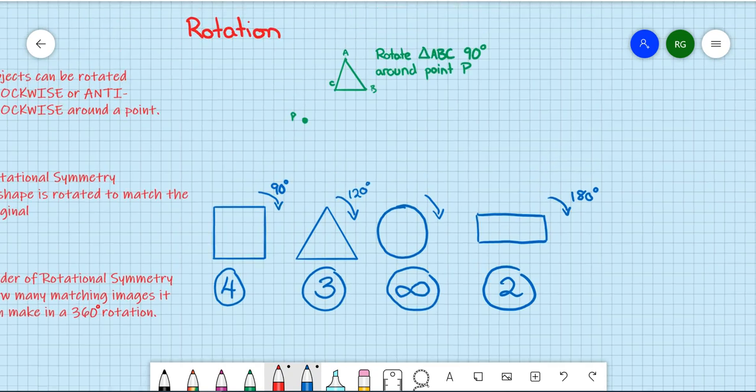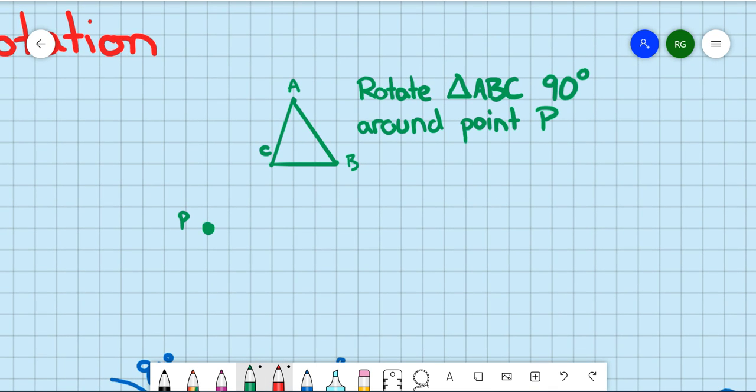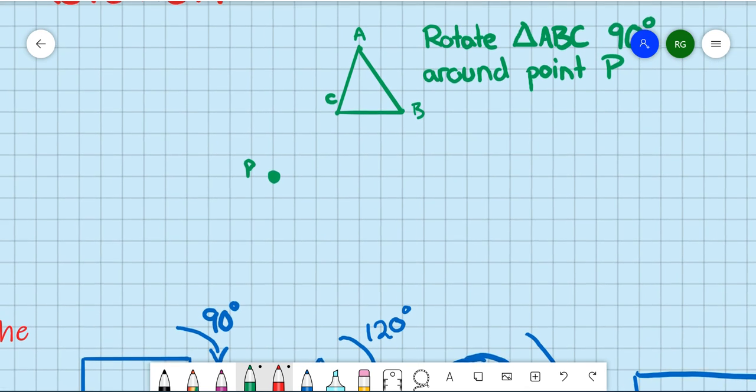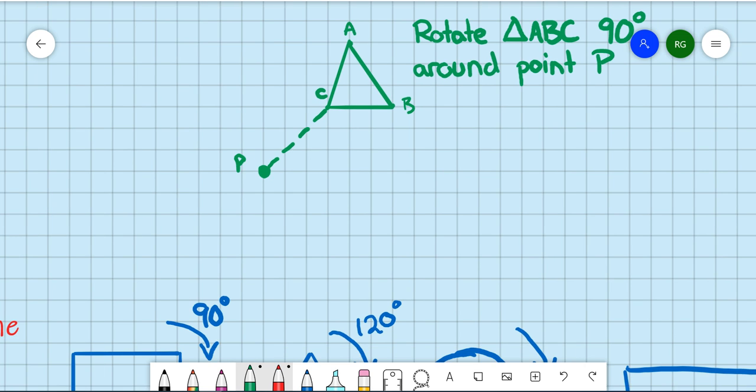Now just to give you a little example, up here in green, I've got a small question. It says, rotate triangle ABC 90 degrees around point P. So rather than just spinning the triangle on the spot, what we find is, here's my starting point P, and I'm going to use C, just because it's the closest. And I'm going to draw a dotted line to C. Now in order to rotate this 90 degrees, and in this case we'll say it's clockwise.